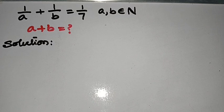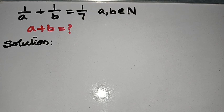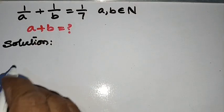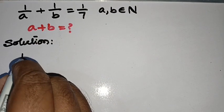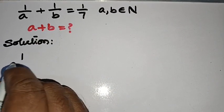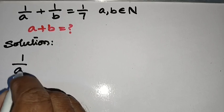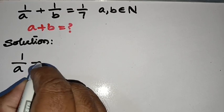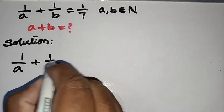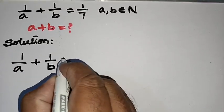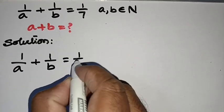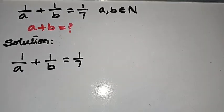That means A and B are positive integers and A and B are not equal to each other. So the given equation we can rewrite it as 1 by A plus 1 by B is equal to 1 by 7.